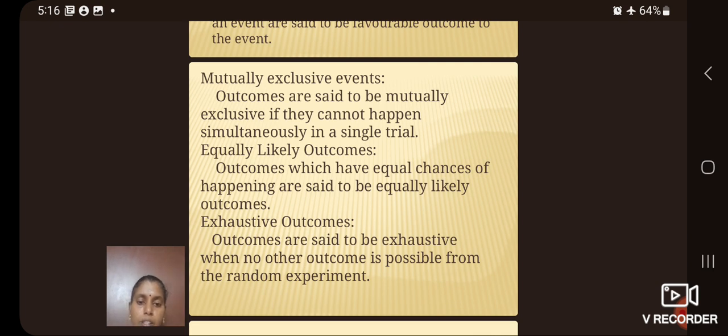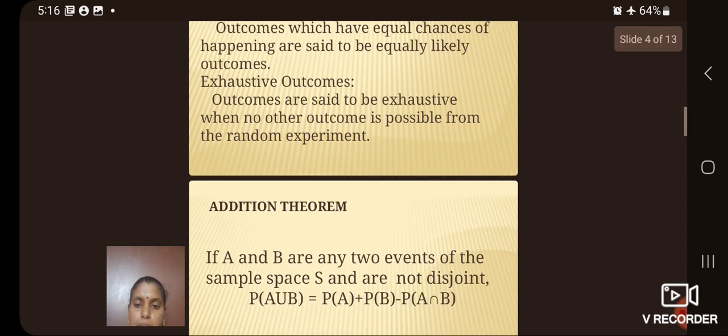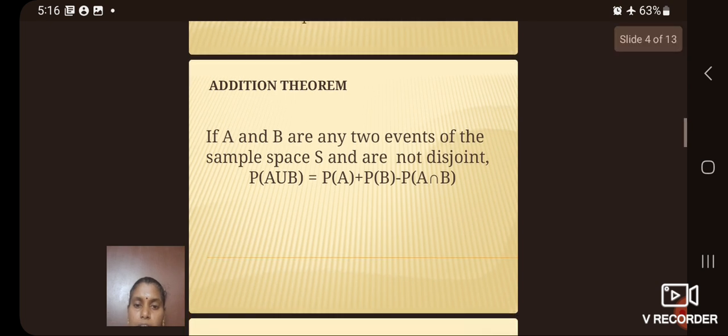Next, we see the mutually exclusive events. Outcomes are said to be mutually exclusive if they cannot happen simultaneously in a single trial. Next, equally likely events: outcomes which have equal chances of happening are said to be equally likely outcomes. Exhaustive outcomes: outcomes are said to be exhaustive when no other outcome is possible from the random experiment.